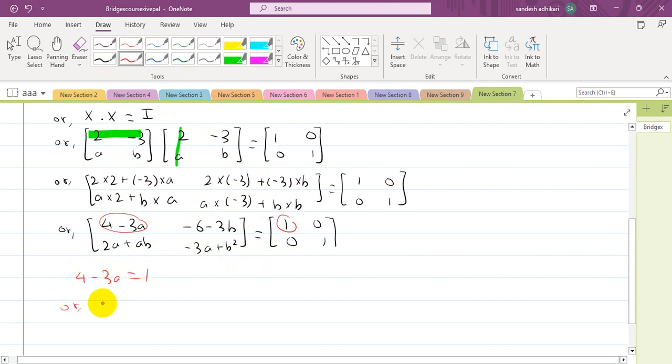Let's solve. From the second component: -6 - 3b = 0, so -6 = 3b. Dividing by 3, we get b = -6/3 = -2. Therefore b value is -2.